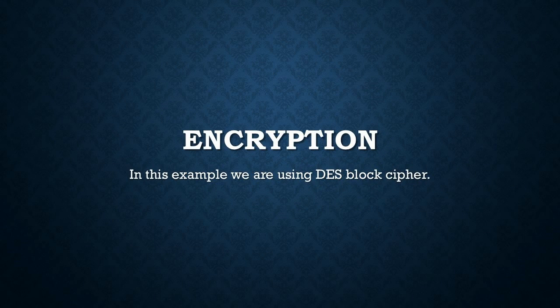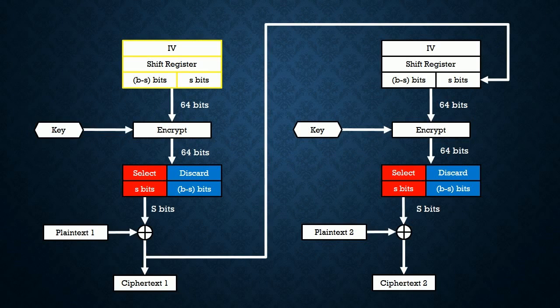Now, we will proceed to the encryption process. We are using DES block cipher as our example. Firstly, we will have an initialization vector, which can be of any bits depending on the user and type of encryption used. In this context, our initialization vector will be 64 bits, because we are using DES block cipher.